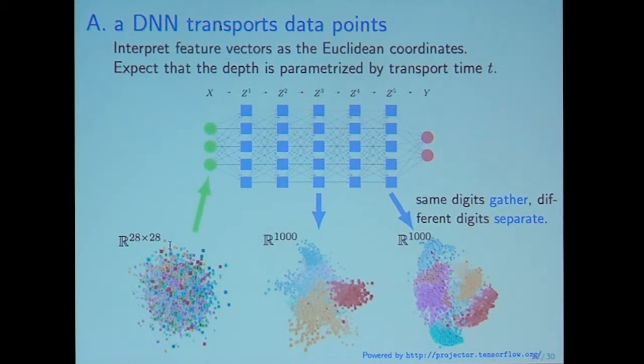My answer is that a deep neural network transports data points from left to right. I mean that we regard the feature vectors as Euclidean coordinates. For example, MNIST case. In the input field, we regard MNIST data as 28 by 28 vector. We also regard intermediate firing as a 1,000-dimensional vector.